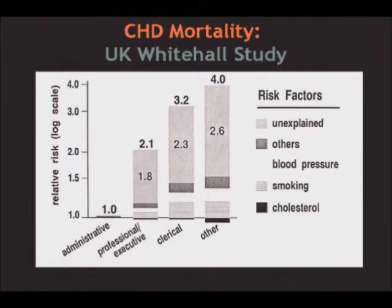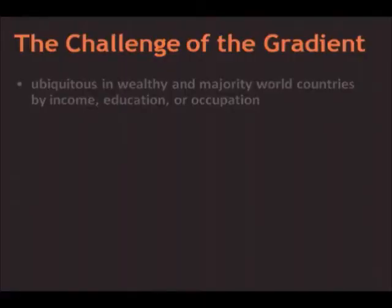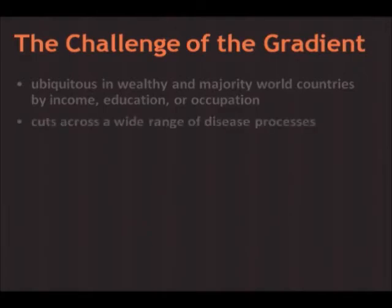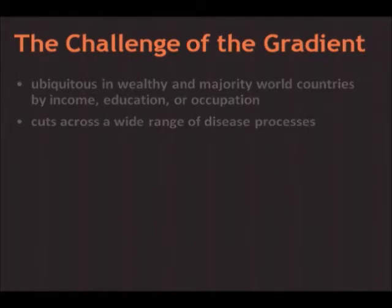This framed what Len Syme, the epidemiologist at Berkeley, called the challenge of the gradient. Once you accept that a gradient exists, you can find it across the world's literature — from wealthy to majority-world countries — as stepwise increases in mortality, decreases in life expectancy, and increases in health-adjusted life expectancy, whether you divide populations by income, education, or occupational status and prestige. I collected these papers from 1987 to 1995, gave up after over 2,000, and they were becoming a fire hazard. The gradient also cuts across a wide range of disease processes — it's easier to say which diseases don't show gradients, like some gynecological cancers and malignant melanoma.